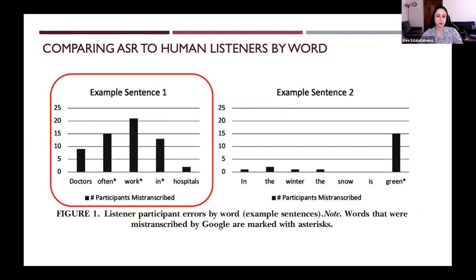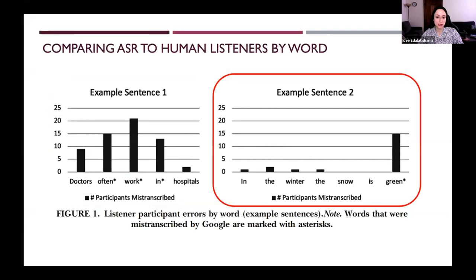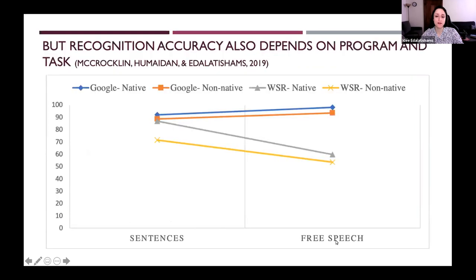Let's look at two example sentences and compare ASR and human recognition by word. In example one — 'doctors often work in hospitals' — the words 'often,' 'work,' and 'in' were mistranscribed by Google, and the highest number of human mistranscriptions also happened for these three words: 15, 22, and about 13 people. In example two — 'in the winter the snow is green' — the word 'green' was mistranscribed by 15 out of 37 listeners, and the same word was also mistranscribed by Google. Overall, about 5% of participants mistranscribed words correctly transcribed by Google, but about 30% mistranscribed words incorrectly transcribed by Google, showing that participants made more errors on words Google got wrong.